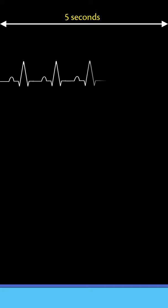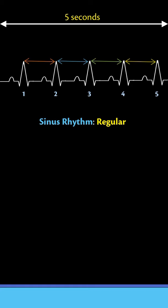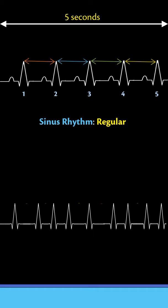Imagine 5 seconds of heart activity. In sinus rhythm, the heart beats regularly — we see 5 beats in 5 seconds. However, in afib, the heart beats faster and irregularly. The distance between beats varies; in this case, 9 beats in 5 seconds. Irregularity is the main characteristic of afib.